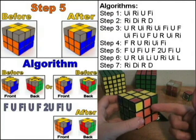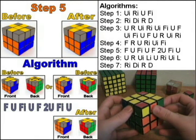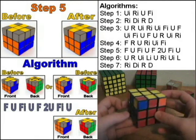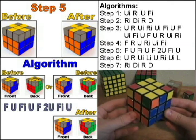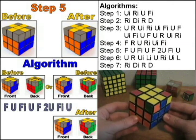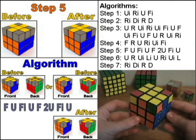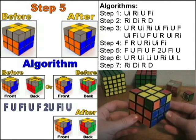The goal in step 5 is to pair up these edges with the centers. The algorithm in this step is F U F I U F 2 U F I U.